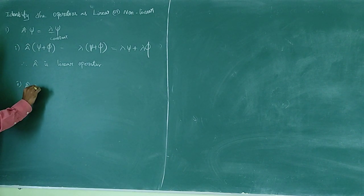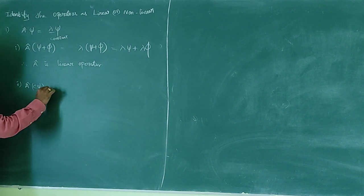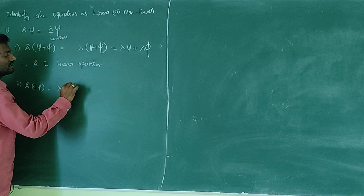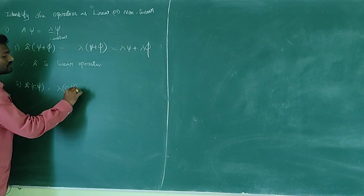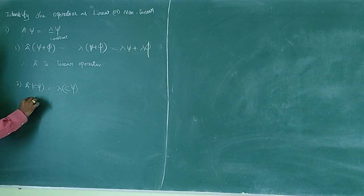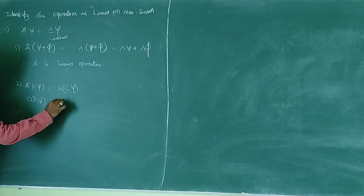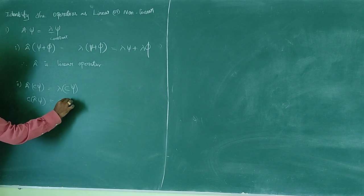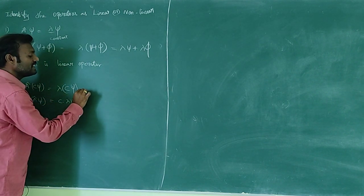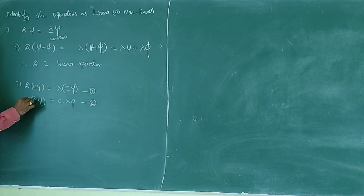Second method: A-cap into C·ψ — how do we operate? We get λ·(C·ψ). Now from the other side: C·A-cap(ψ) gives C·(λψ). Both equal C·λψ, so two constants are produced and both are equal. Equations 1 and 2 are equal, therefore A-cap is a linear operator.